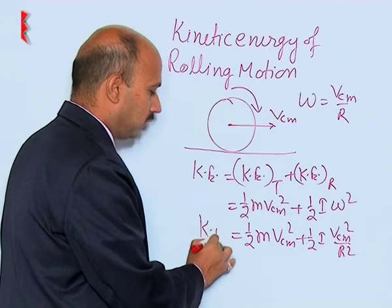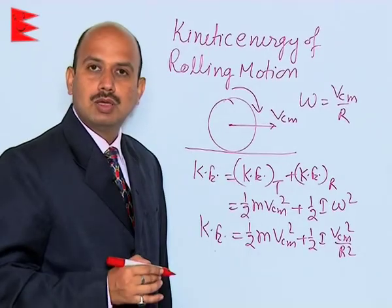So this is the formula for the total kinetic energy of the body having rolling motion.